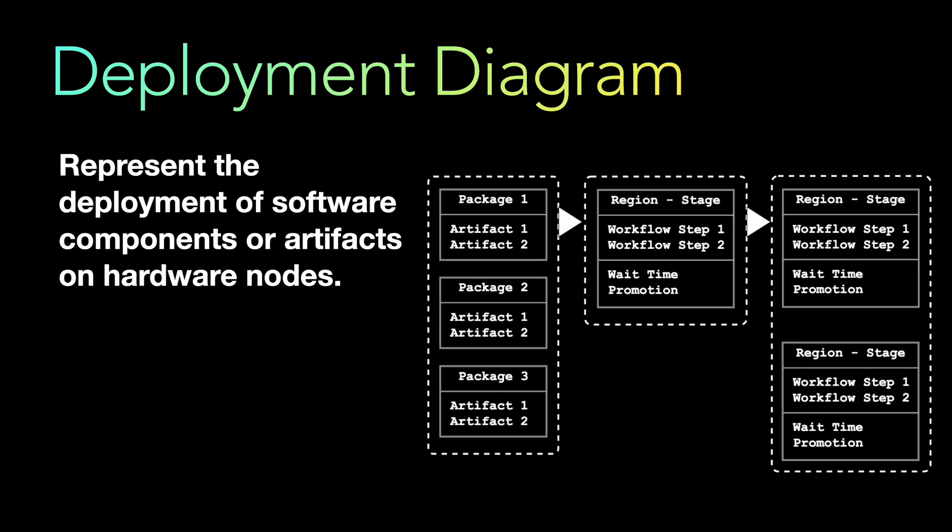Last but not least is the deployment diagram. In my experience, this is where 90 percent of people fall short — they do not understand all aspects of deployment. CI/CD, continuous integration and continuous deployment, is an entire field with hundreds of certifications and careers built around it because it is a complex thing. Deployment diagrams represent the deployment of software components or artifacts on specific hardware nodes.